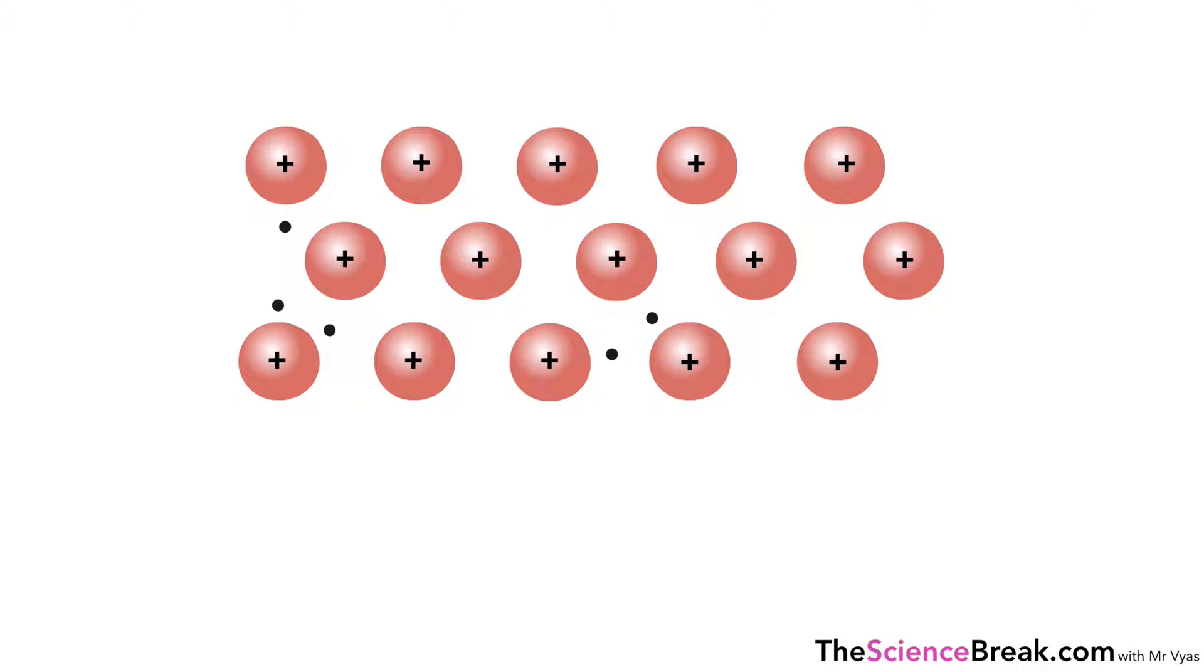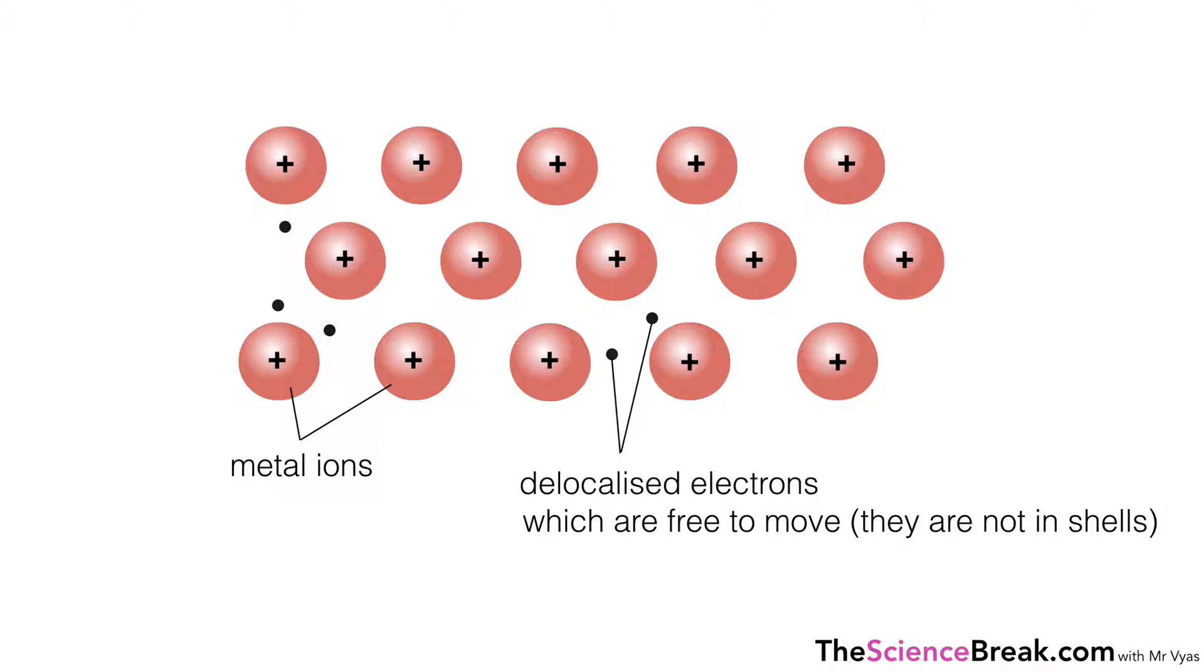Now the first thing we're going to look at is this idea of how metals can conduct electricity. So you remember from the previous video, here we have our metal ions which are in the structure of the metal and here are our delocalized electrons.